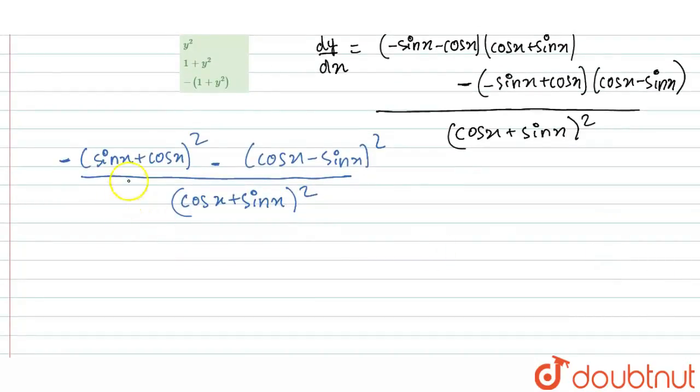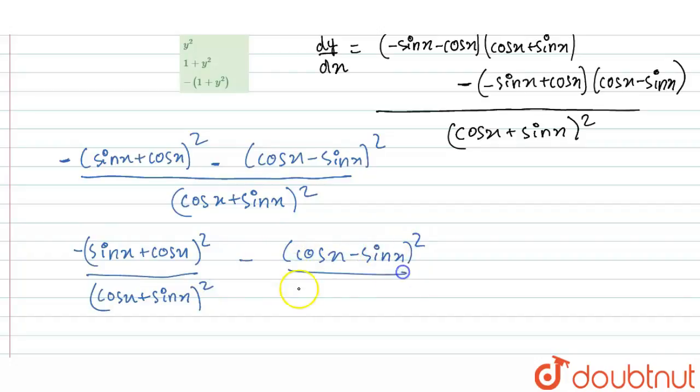So now, just split this numerator into two parts, which will be minus of sin x plus cos x whole square upon denominator, which is cos x plus sin x whole square, minus cos x minus sin x whole square upon cos x plus sin x whole square. So now,